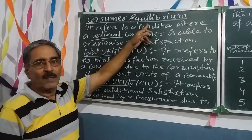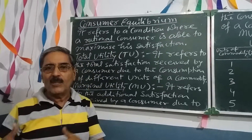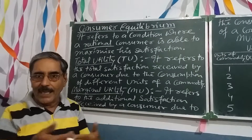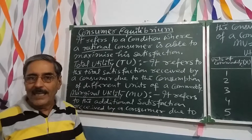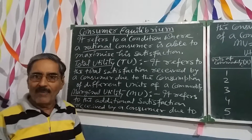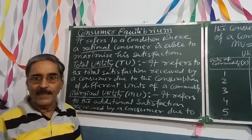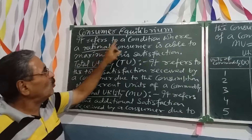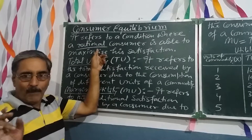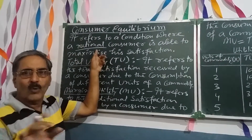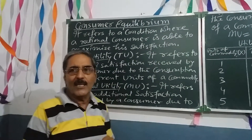This chapter is Consumer's Equilibrium. Consumer equilibrium is a condition where, whenever a consumer is spending some money, he is getting in return some satisfaction, and he wants to maximize it. A consumer will never pay more than the satisfaction he is getting from the commodity. It refers to a condition where a rational consumer — meaning a person who thinks carefully before taking any action — is able to maximize his satisfaction.